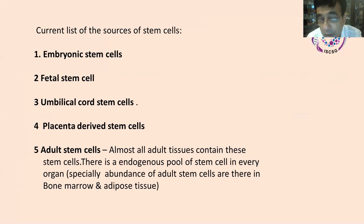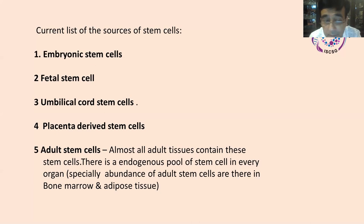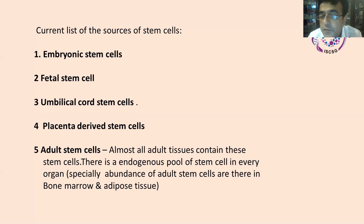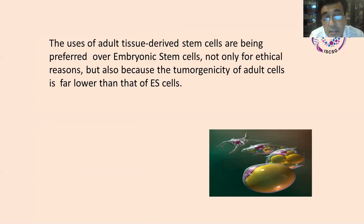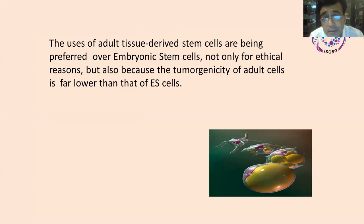The placenta and umbilical cord are rich in mesenchymal stem cells (MSCs). Then there are placenta-derived stem cells, and last but not least, the most interesting and most uniformly present source is the adult stem cell. Almost all tissue in the body harbors stem cells — skin, everywhere — so there is an endogenous pool of stem cells in all organs. The richest procurable source is either the bone marrow or adipose tissue. The uses of adult tissue-derived stem cells are preferred over embryonic stem cells, because it is easier, legally better, and more ethically sound.